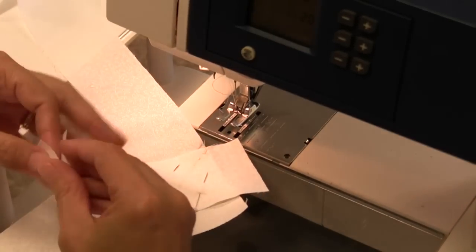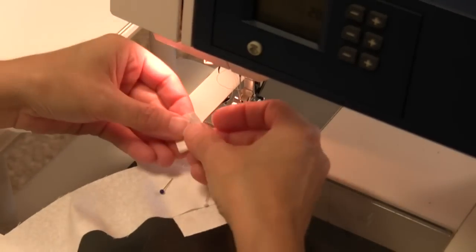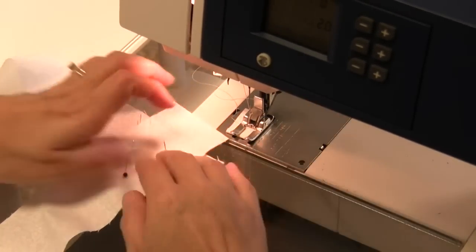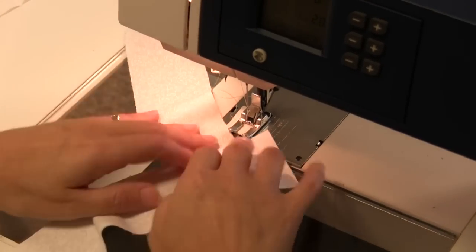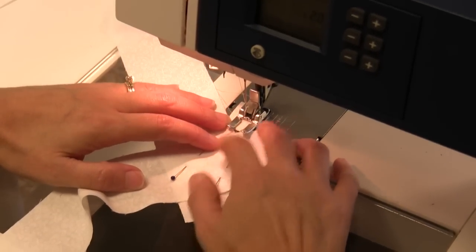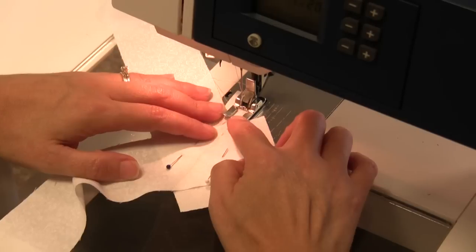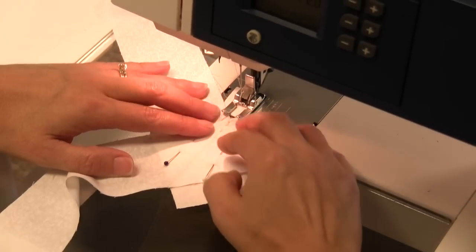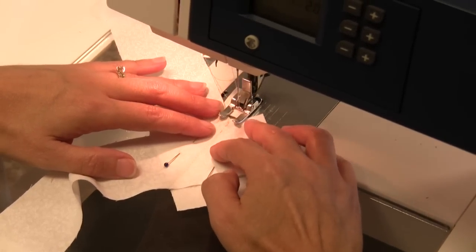So now we're going to stitch right on top of the drawn line. I'm going to start with a little piece from my starter. I'm going to stitch right on top of that line. I've changed my foot to an open-toed foot or an applique foot because it's easier for me to see my stitching line.